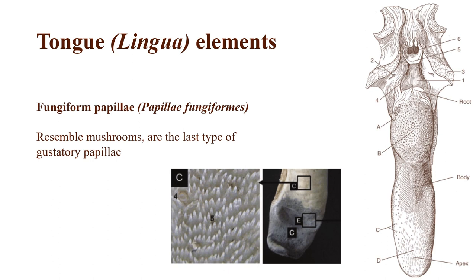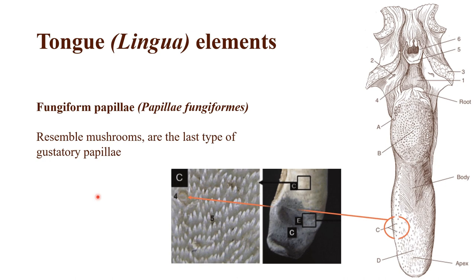Last but certainly not least, we have the fungiform papillae. These are a favorite because they look like mushrooms under a microscope — if you're interested, definitely check out tongue histology on YouTube or other resources, or comment below requesting a video on this. They are also for taste recognition.